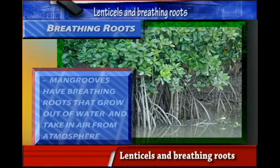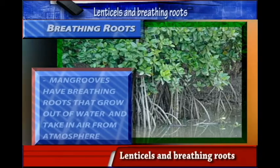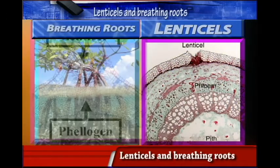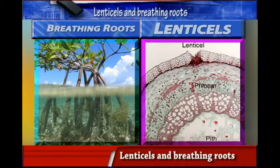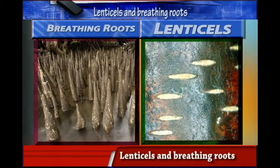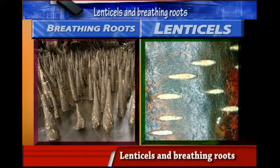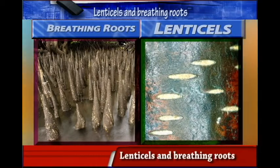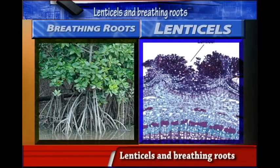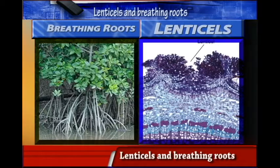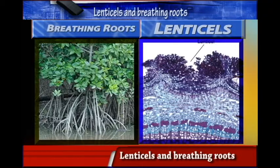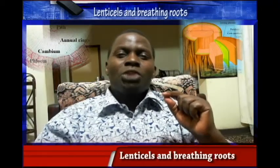For mangroves, the breathing roots grow out of the water and take in air from the atmosphere. Lenticels and breathing roots are both very important to plants. Where the plant has overgrown and the bark is very thick, it uses lenticels to take in air to the surrounding cells for easy survival. Breathing roots help plants in waterlogged and mud-locked areas — the roots grow above the water and mud level to get oxygen from the atmosphere, which is then used by the plant roots.